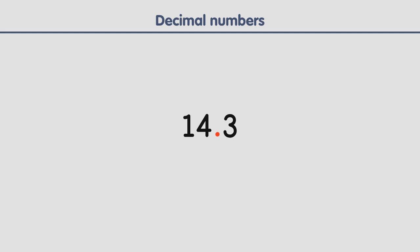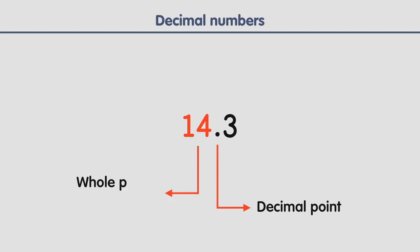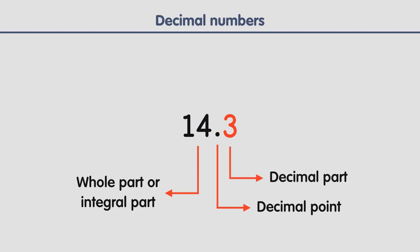The dot in between 14 and 3 is called the decimal point. The number to the left of the decimal point is called the whole part or integral part. Thus, the number 14 is the whole part or integral part. The number to the right of the decimal point is called the decimal part, so 3 is the decimal part. The decimal point separates the integral part and the decimal part.